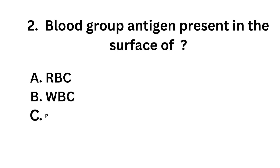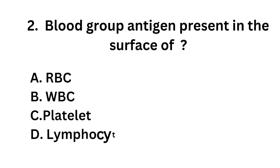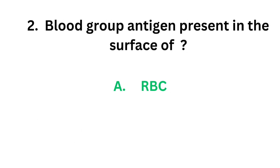Question number 2. Blood group antigen present in the surface of: Option A: RBC. Option B: WBC. Option C: Platelet. Option D: Lymphocyte. The correct answer is Option A, RBC. Blood group antigen is present in the surface of RBC.